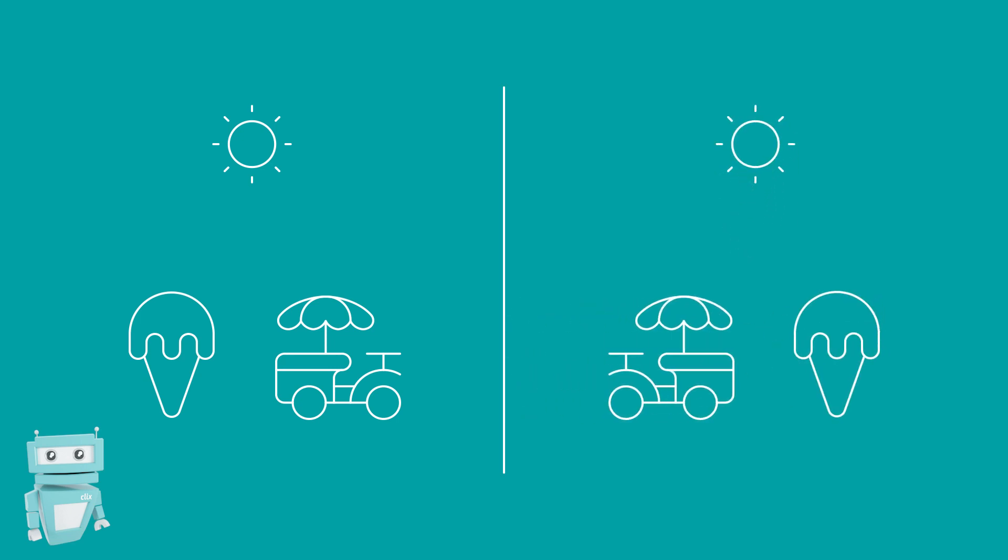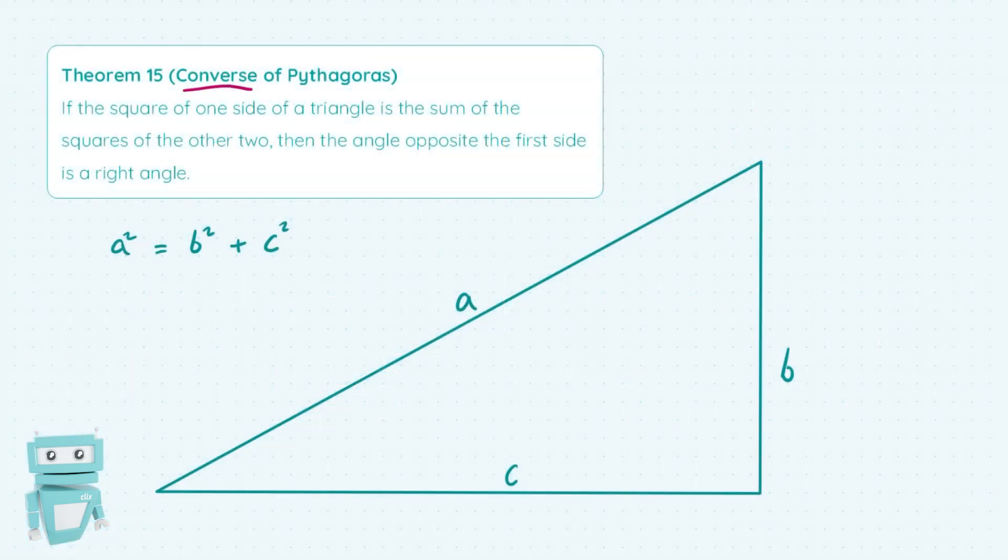So it's just the same thing in reverse order and in this case we were told that if the square of one side of a triangle is the sum of the squares of the other two then the angle opposite the first side is a right angle. So obviously it rings quite similar to Pythagoras' theorem but it's in the reverse order.